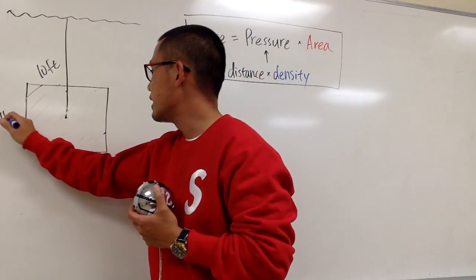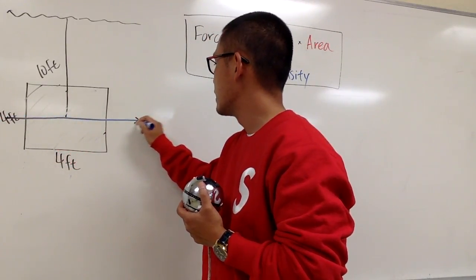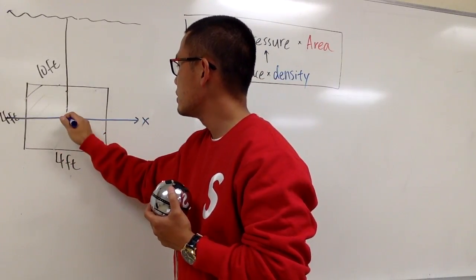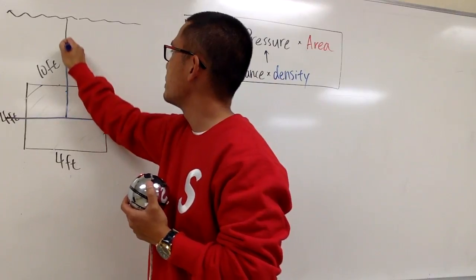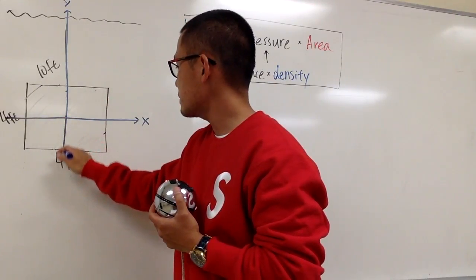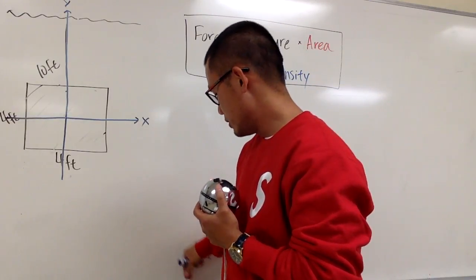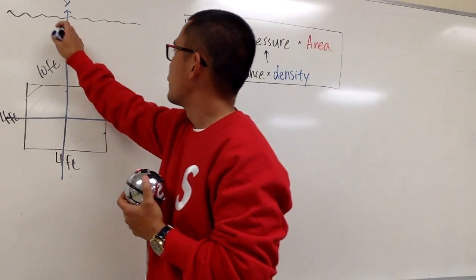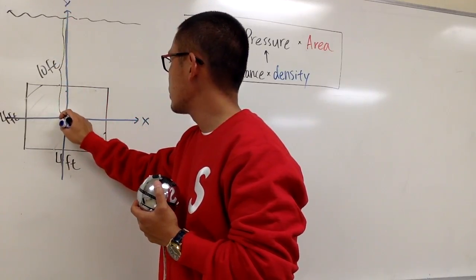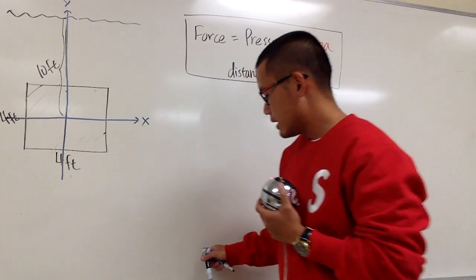I'll place my x-axis here in the middle, and the y-axis going through the center as well. From here to the water surface — to the middle — it's altogether 10.